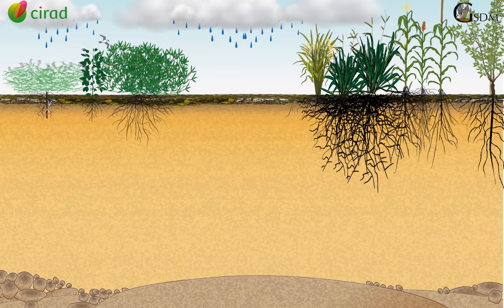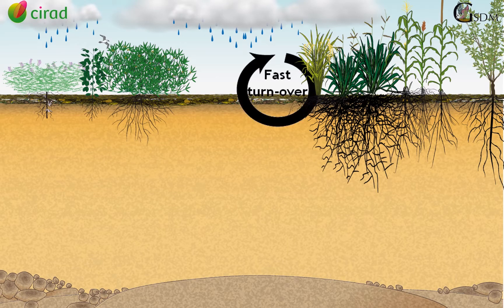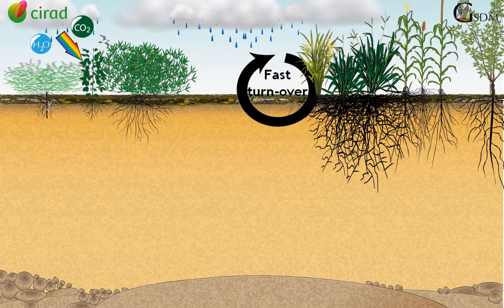The functioning of a direct seeding mulch-based cropping system relies on a high and fast turnover of organic matter. Plants, through photosynthesis, convert sunlight energy into chemical energy, which is stored in carbohydrate molecules. These photosynthetic products, such as sugars, are produced from carbon dioxide and water. They are the main constituents of above- and below-ground biomass.